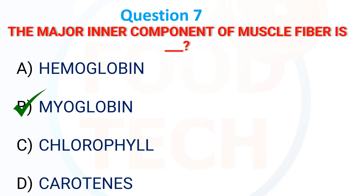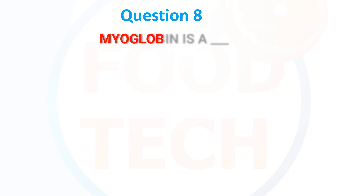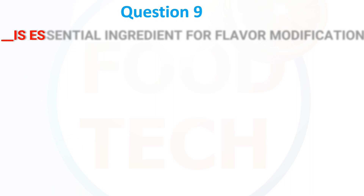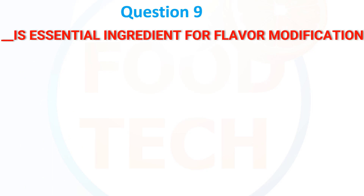Myoglobin is a: A) Pigment, B) RBC, C) WBC, D) Color. The answer is Pigment. Dash is an essential ingredient for flavor modification.